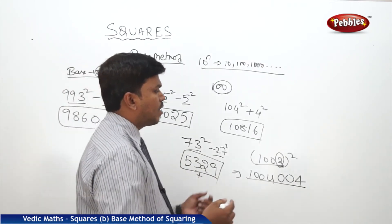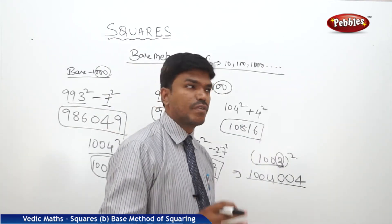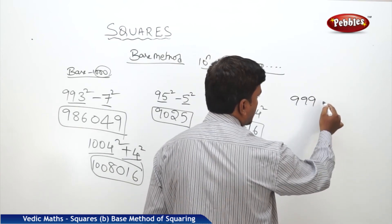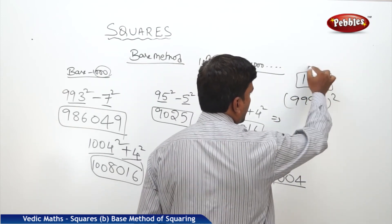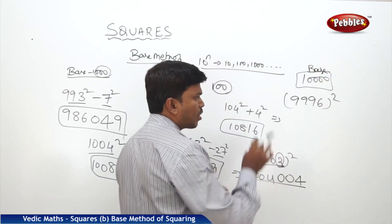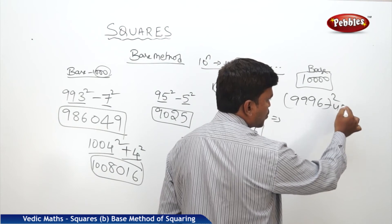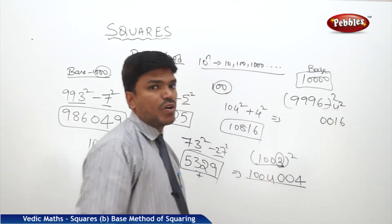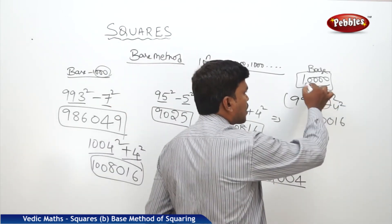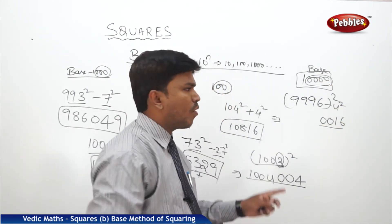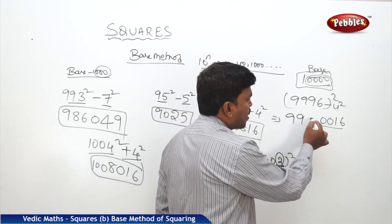Like this we can calculate squares nearer to 1000. What about base 10,000? Suppose I need 9996 square. The base is 10,000. Compare 9996 with 10,000 — it is 4 less. What is 4 square? 16. But the right side part should consist of 4 digits because there are 4 zeros in 10,000, so write 0016. The left side: 9996 minus 4 is 9992. So the answer is 99920016.